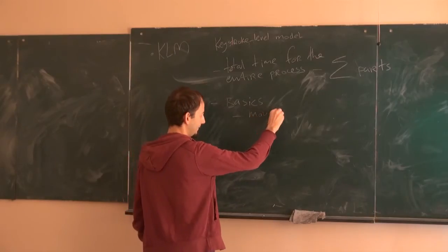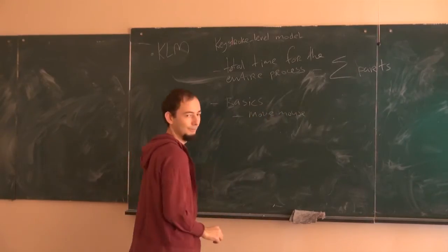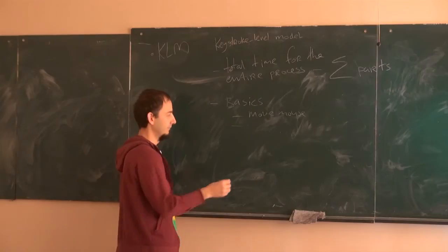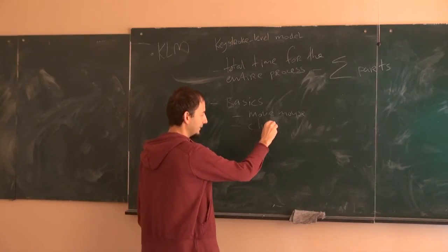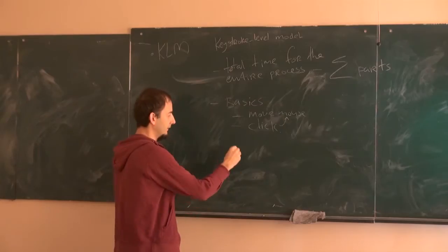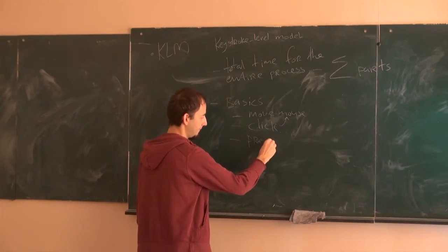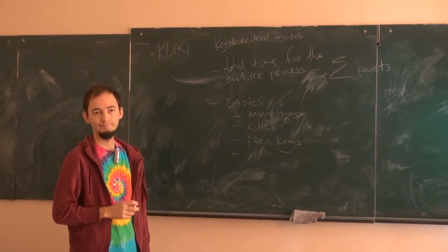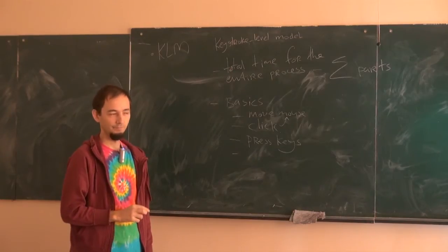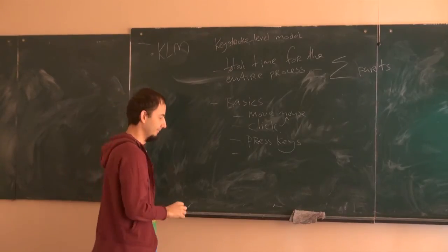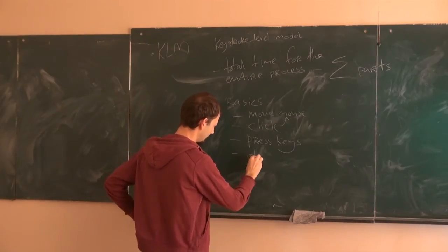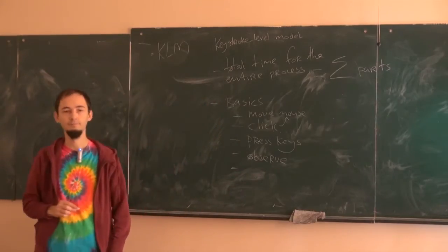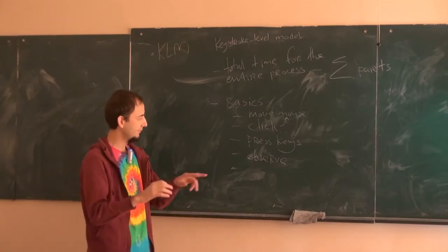So you move the mouse. What else do you do? You click, you press keys. What else? You observe. And you write — when you write, you press keys.